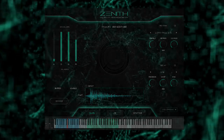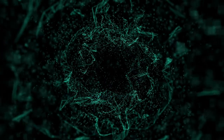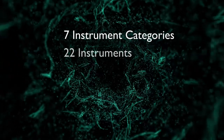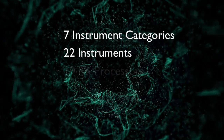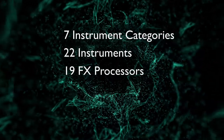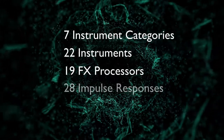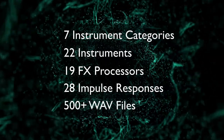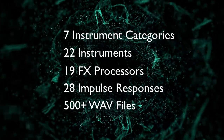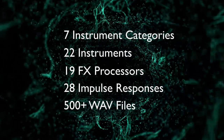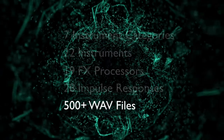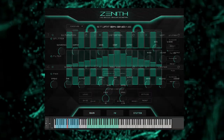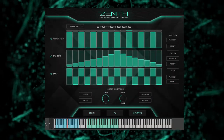At its core, Zenith is made up of seven instrument categories, 22 instruments, 19 FX modules, 28 impulse responses and just over 500 WAV files. Zenith comes with three engines: a main engine, an FX engine and a stutter engine.